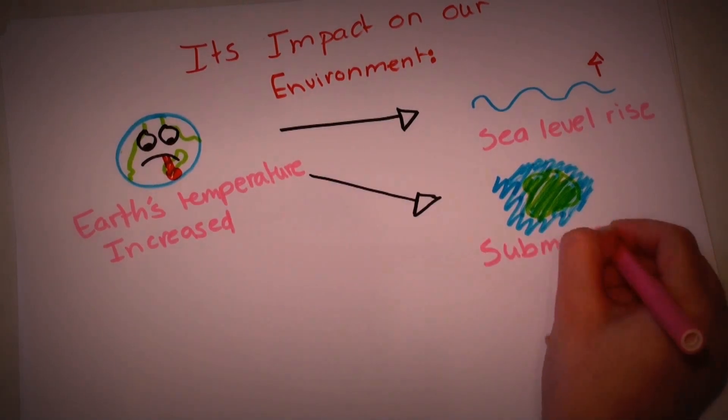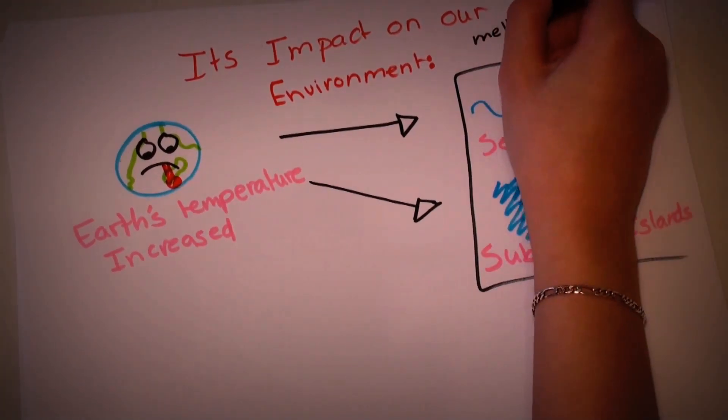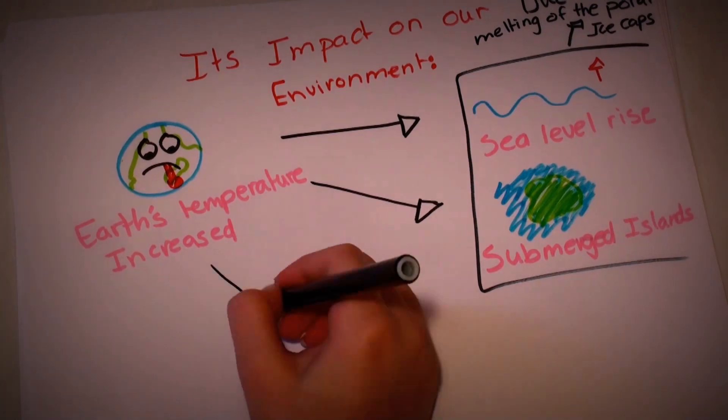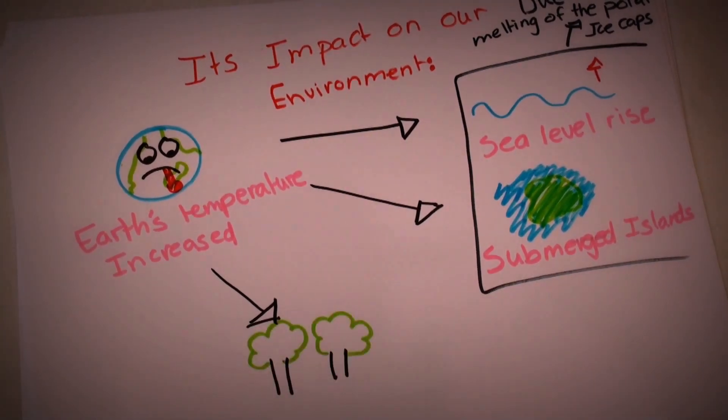Climate change caused other things like wildfires. Wildfires occur when it's too hot and the trees' barks are turned into fuel.